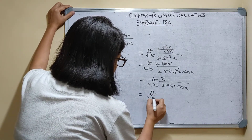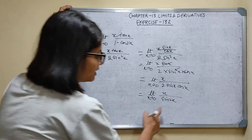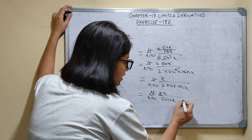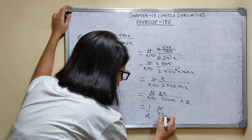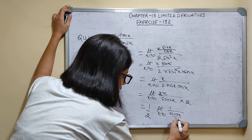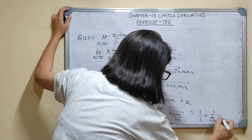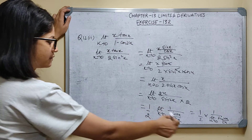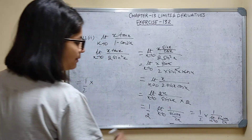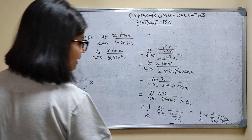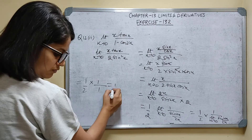Since 2 sin x cos x equals sin 2x, we have limit x tends to 0 of x upon sin 2x. To apply the standard formula sin x/x → 1, I multiply and divide by 2, giving (1/2) times limit x tends to 0 of 2x upon sin 2x, which equals (1/2) times 1 upon [limit 2x tends to 0 of sin 2x/2x] = 1/2 times 1/1 = 1/2. The answer is 1/2.